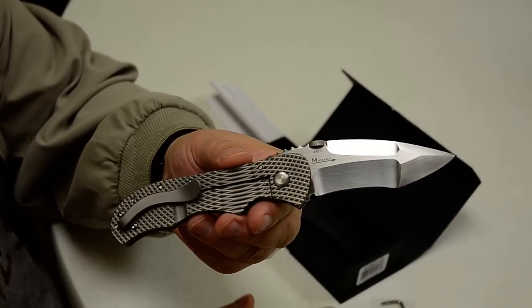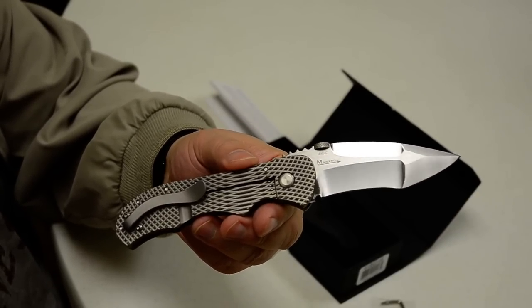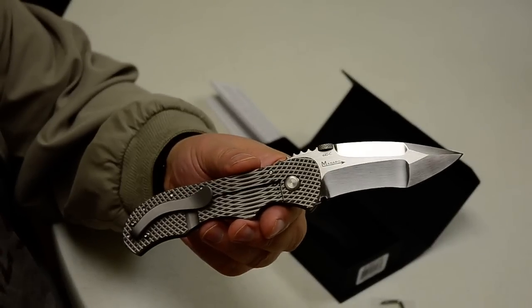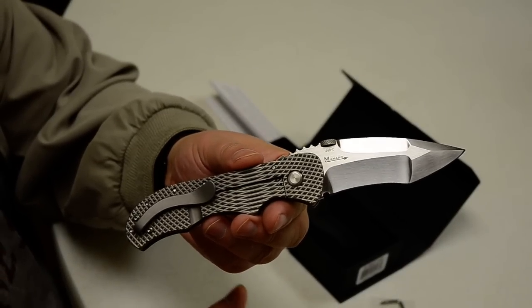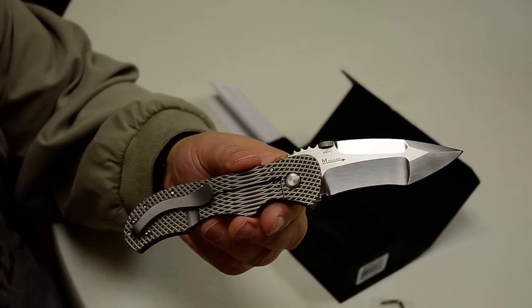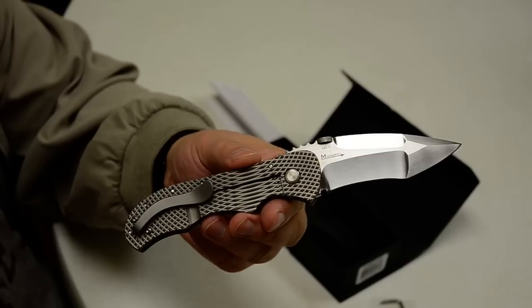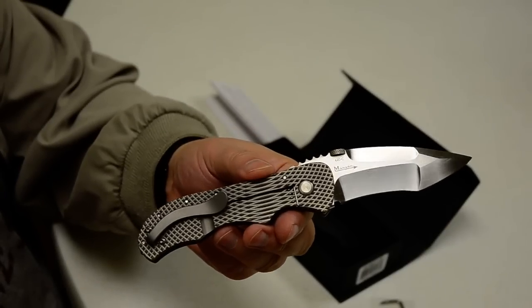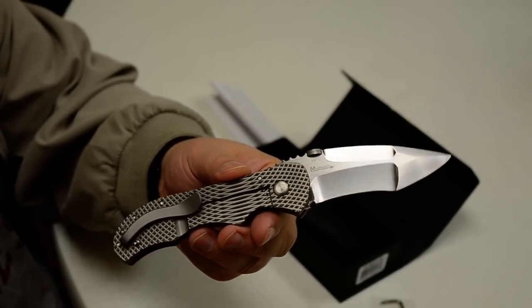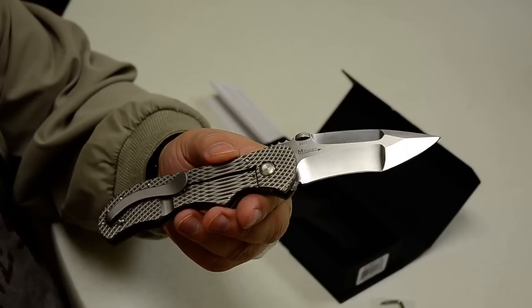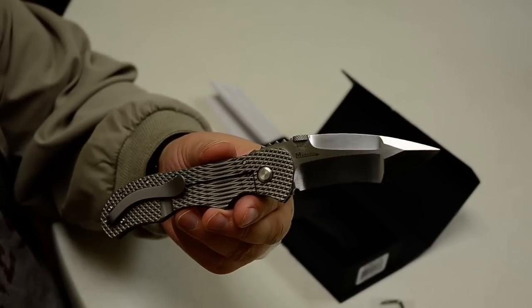You look at the Rockwell hardnesses on this knife. It's 57 to 58. So the hardnesses are very similar on Aus8. A lot of these knives, unless you get up into the Vanadium steels, very few of them get up to 59 or 60 hardness until you get into the real expensive steel. D2 and stuff like that.